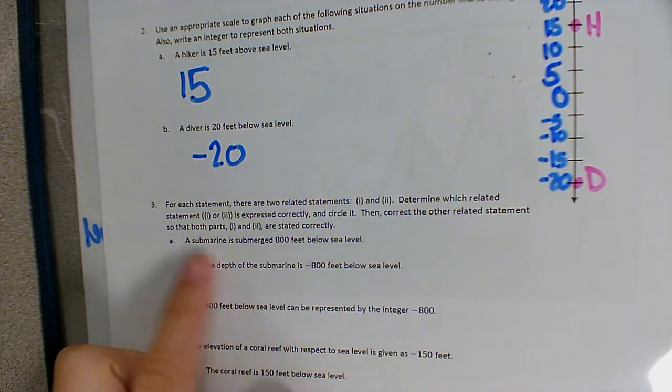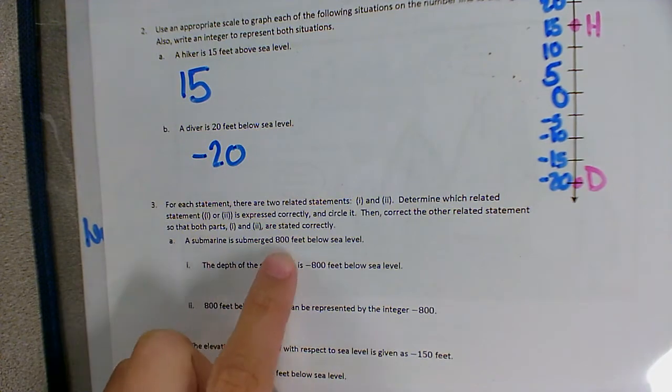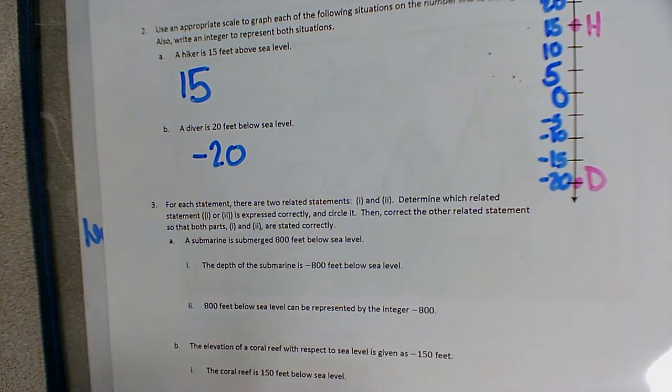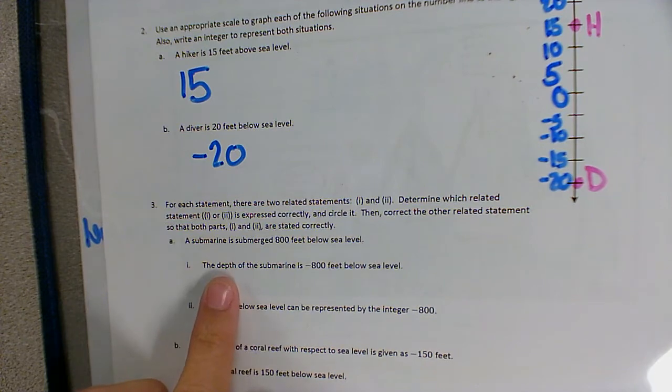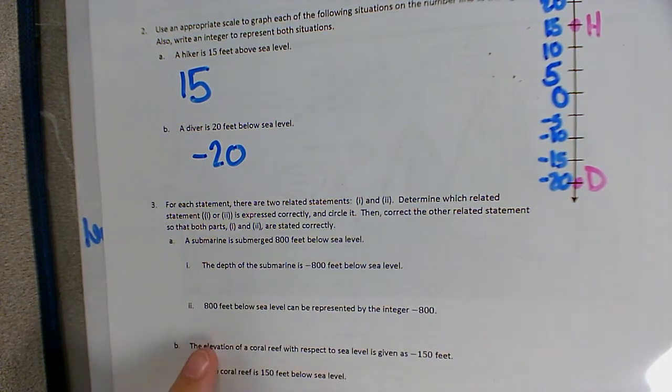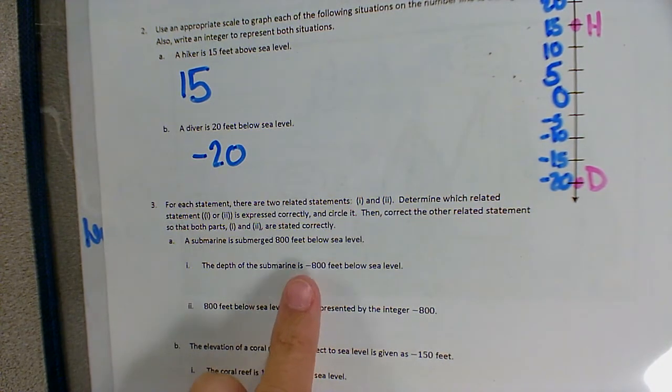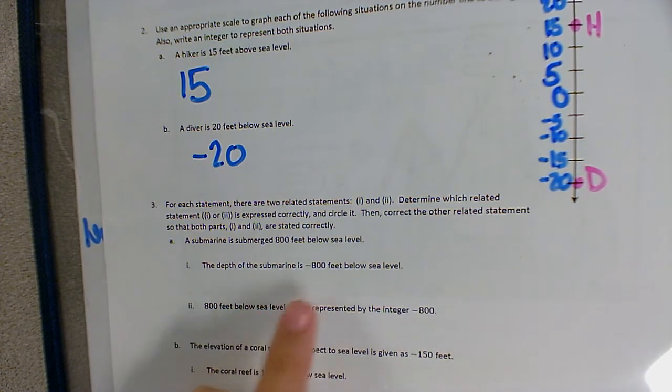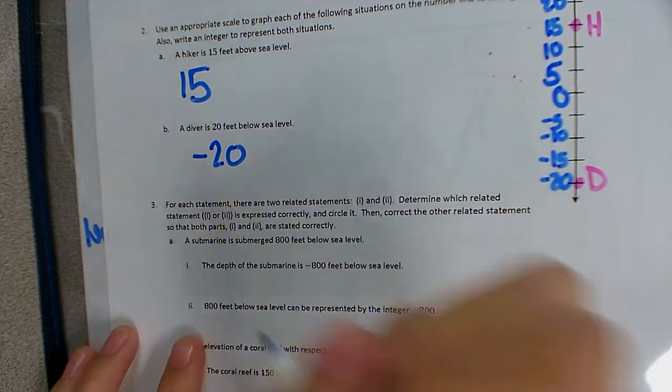So our statement is, a submarine is submerged 800 feet below sea level. Statement one says, the depth of the submarine is negative 800 feet below sea level. And statement two says, 800 feet below sea level can be represented by the integer negative 800. When we talk about sea level, we wouldn't say negative 800 feet below sea level. That would cancel itself out, and it would be 800 feet above sea level. So this one's not correct.